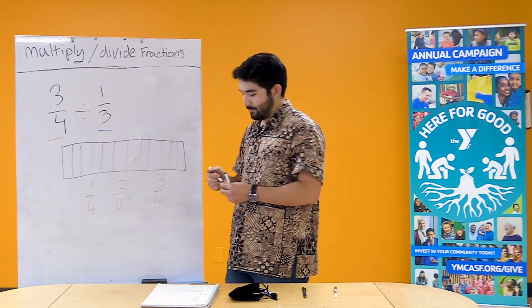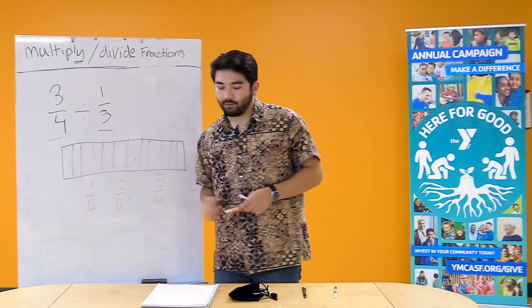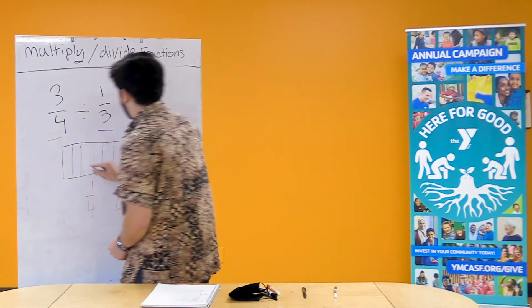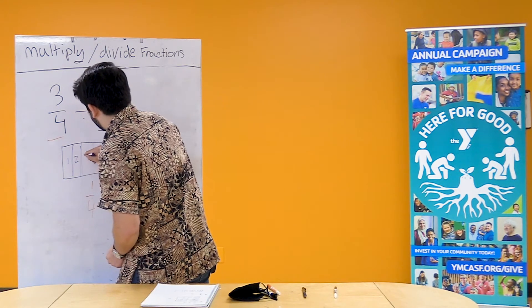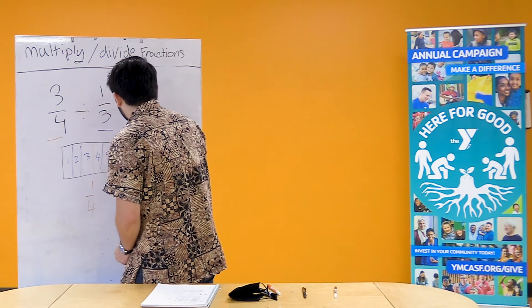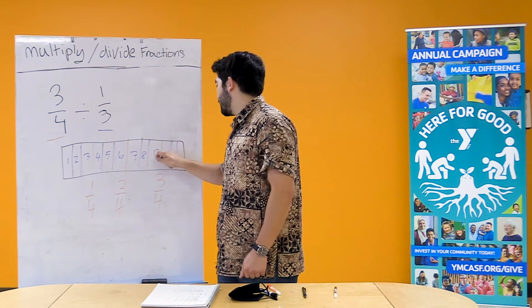Okay. So now that we counted three fourths let's count all the thirds within our fourths. And that's actually gonna tell us our answer. So we're gonna go one, two, three, four, five, six, seven, eight, and finally nine.